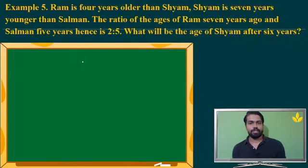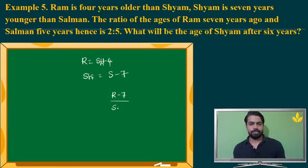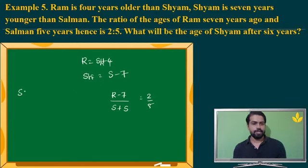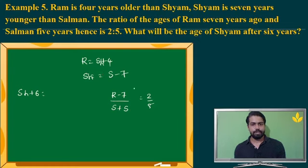Ram is 4 years older than Shyam — let's write that as an equation. And Shyam is 7 years younger than Salman. The ratio of Ram's age 7 years ago and Salman's age 5 years hence is equal to 2 is to 5. What would be Shyam's age after 6 years? To find Shyam's age I need to solve these 3 equations. Let us take Ram as X, Shyam as Y, and Salman as Z.